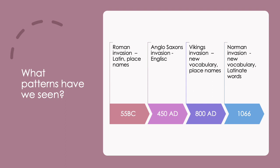We met the Anglo-Saxons, who were different Germanic tribes who came over from Europe. They developed what we now recognise most closely as English words that remain in our language.